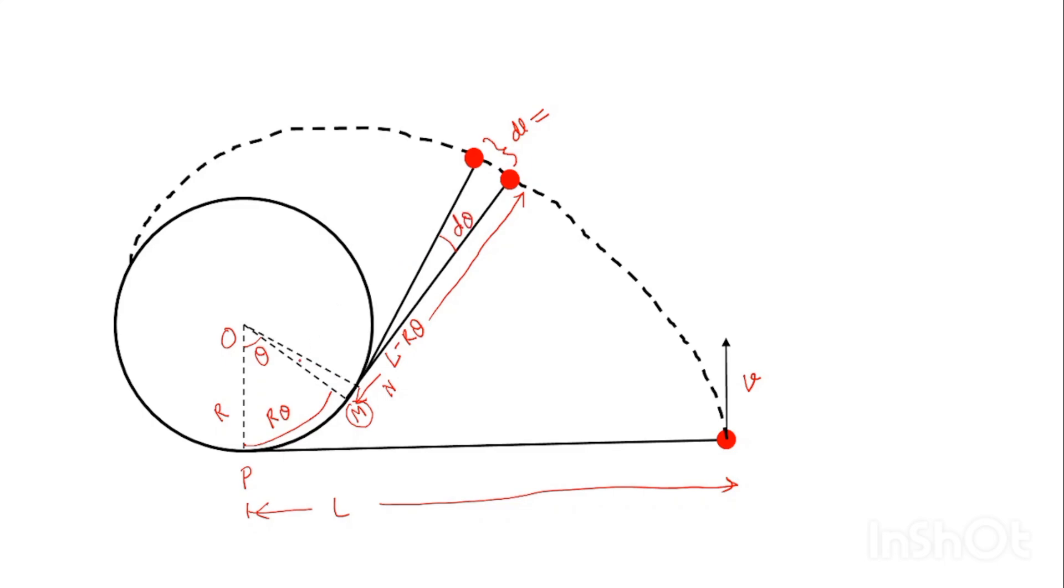And the tangency angle here, the contacts which make at the center, this angle will also be dθ. Isn't it? So, we can clearly say, as the ball is moving around the circle centered at M and having a radius L minus Rθ. So, DL, this length will be (L minus Rθ) times dθ. Simple, L equal to Rθ we are using. This is DL.